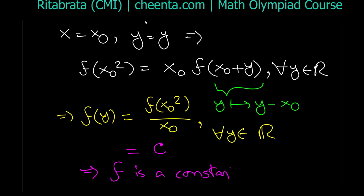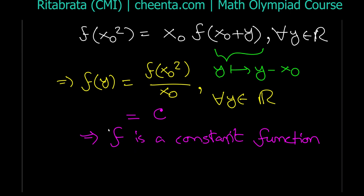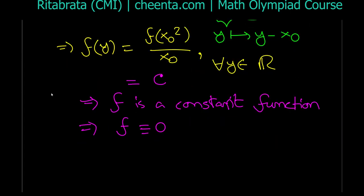But we already know which constant function can satisfy this equation — only the identically zero function. So f must be identically equal to zero. We have shown: if there is a non-zero point where f is zero, then f must be identically zero. So now assume f is not identically zero.